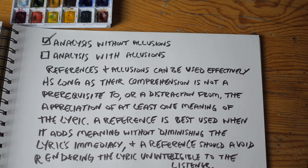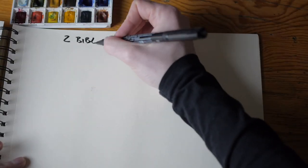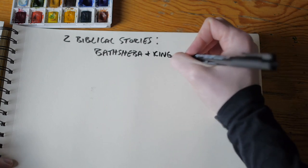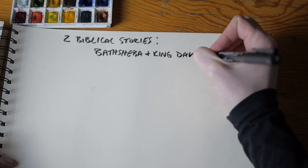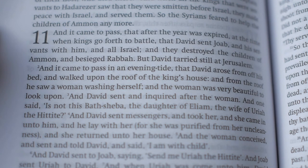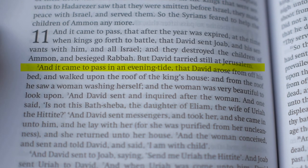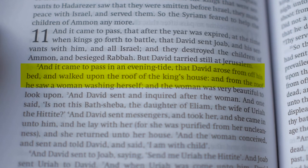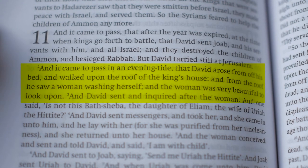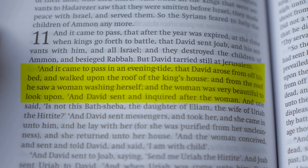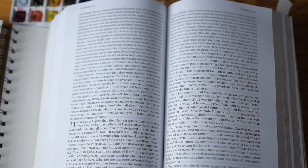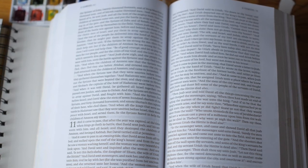So what are the allusions in this verse? The images of this verse conflate two biblical stories: the story of Bathsheba and King David — the same David who played the secret chord that pleased the Lord — and the story of Samson and Delilah. Leonard Cohen's stunning image in this verse is in fact a direct reference to a scene from the Bible, and not just a scene, but an entire story.